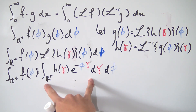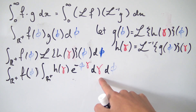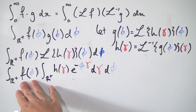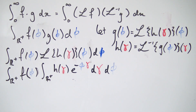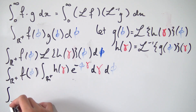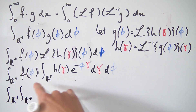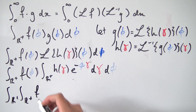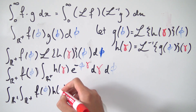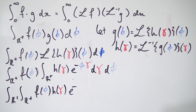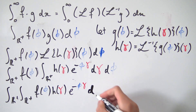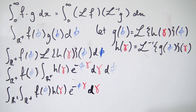Now notice that the inner integral is with respect to γ, which means we can bring f(φ) inside it — it's just like a constant with respect to γ. So we get the double integral over ℝ⁺ of f(φ) times h(γ) times e^(−φγ) dγ dφ.